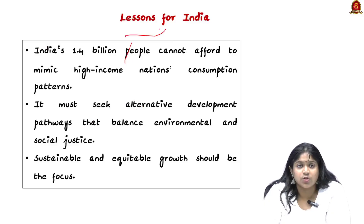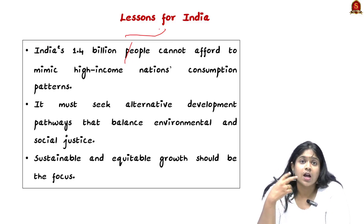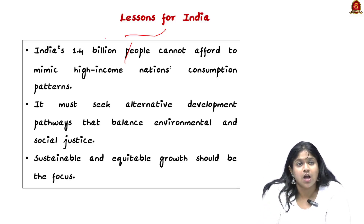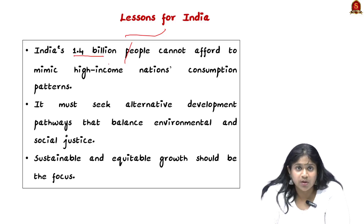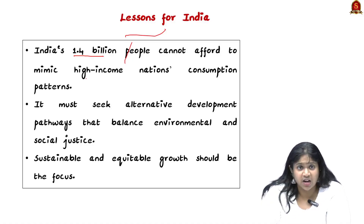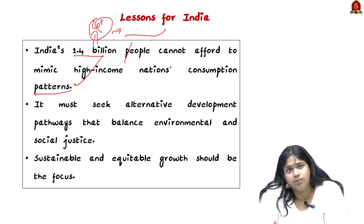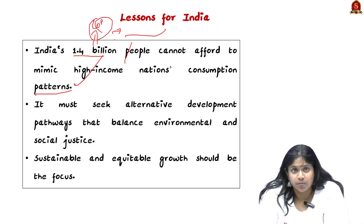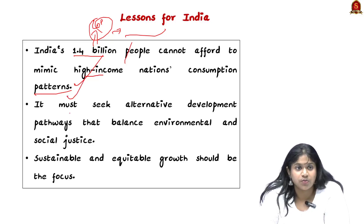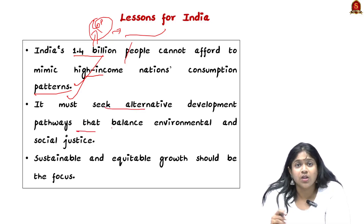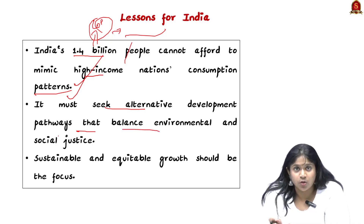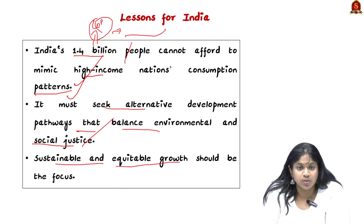The lesson for India is that we must bring in criteria and arguments suitable for our country, which comprises 1.4 billion people, and we cannot afford to mimic the consumption patterns of high-income nations. Even in many COPs, India has argued how it is difficult to represent both developed and developing country standards. India must seek alternative development pathways that balance environmental concerns with human development and social justice, making sustainable and equitable growth the focal point.